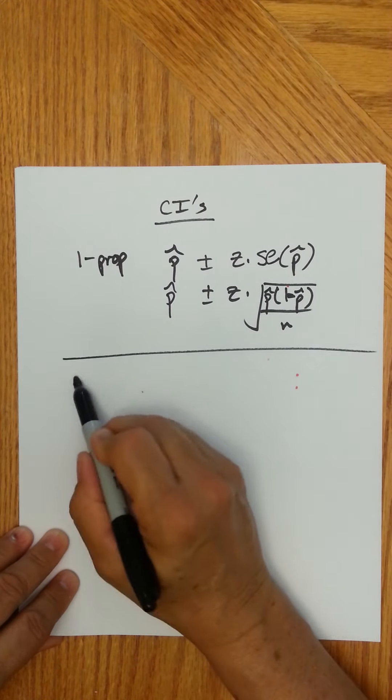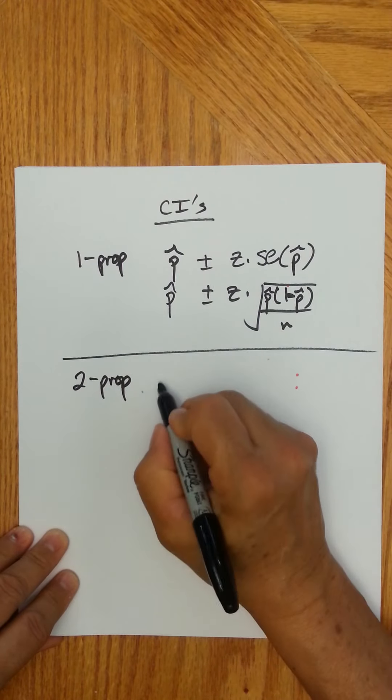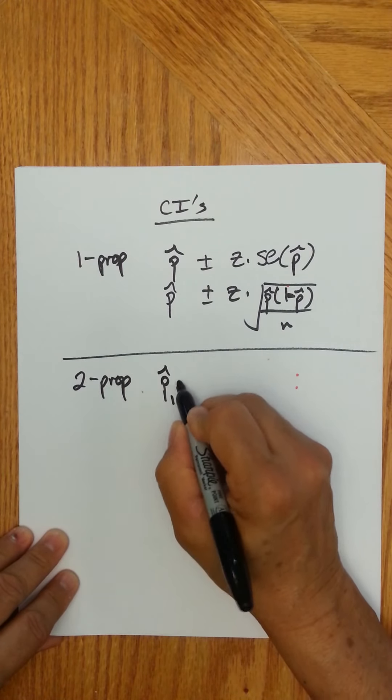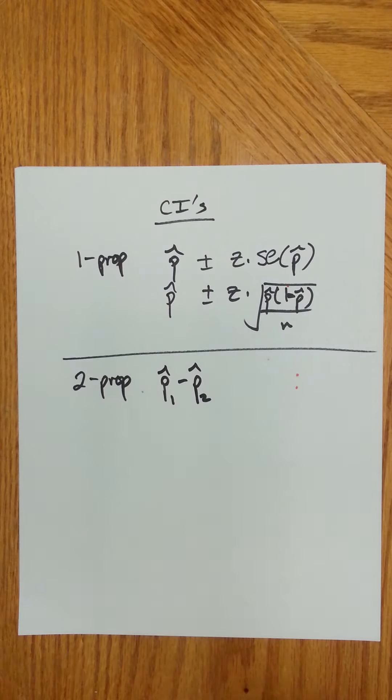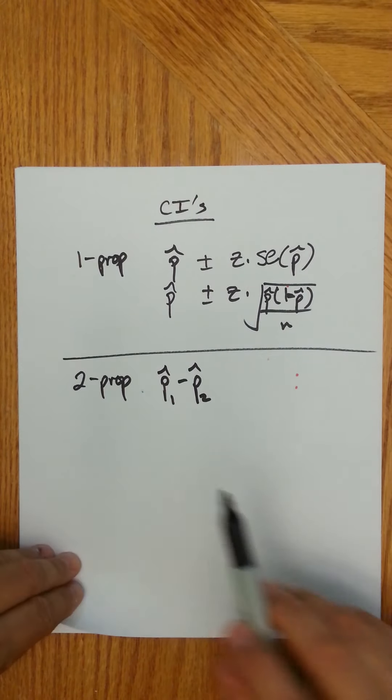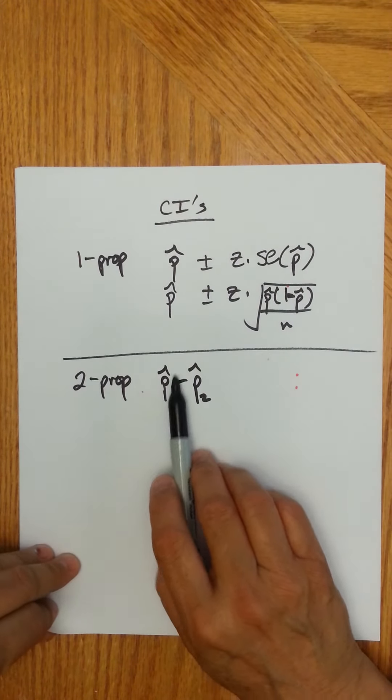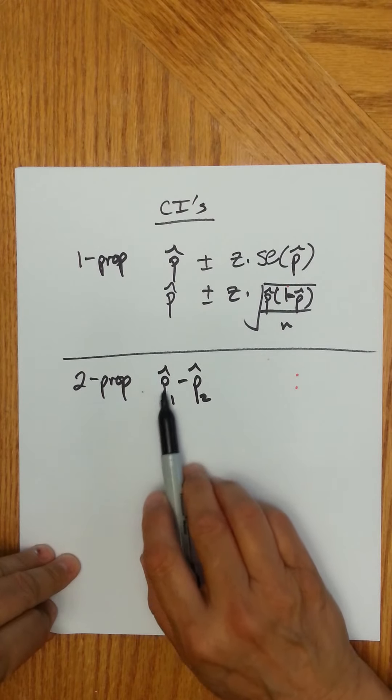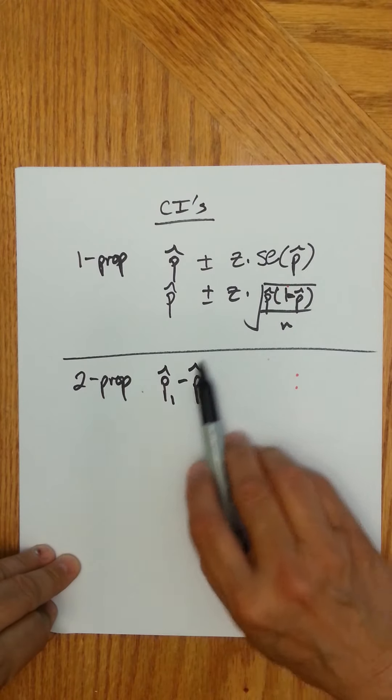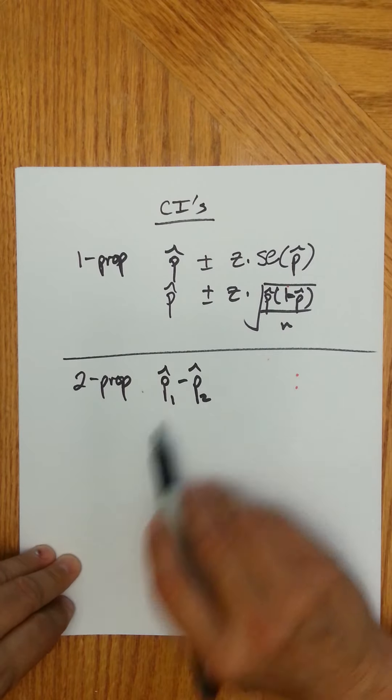Now for two proportions, just to kind of compare, now you're going to have the difference in two proportions. So you have population one, so you take a sample from that and you can get a sample proportion from that, population two, sample proportion from that, and subtract the two.